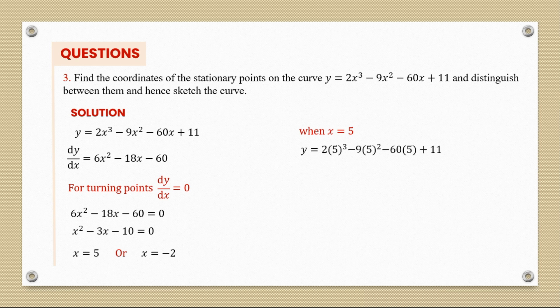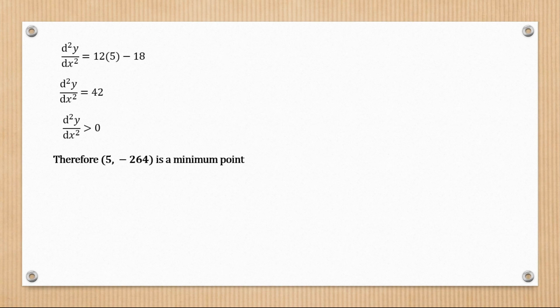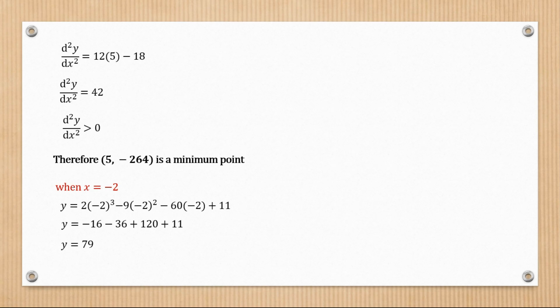Solving quadratically gives x = 5 or x = -2. When x = 5, y = -264, so the turning point is (5, -264). The second derivative is 12x - 18. Substituting x = 5 gives 42, which is greater than 0, so this turning point is a minimum point. When x = -2, y = 79, so the turning point is (-2, 79).